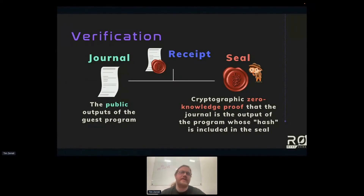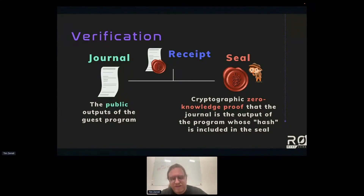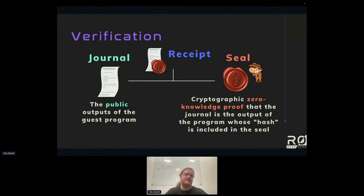The prover can't sneak in some other program and claim they're proving the execution of a different one — that's not possible because the seal contains a hash of the journal. Technically it's a collection of hashes, but essentially you can think of it as a hash and you'll have the right idea.